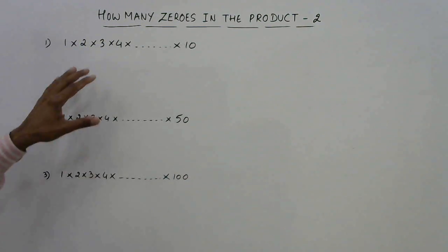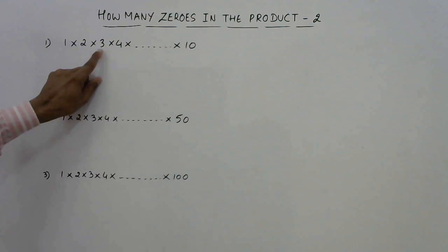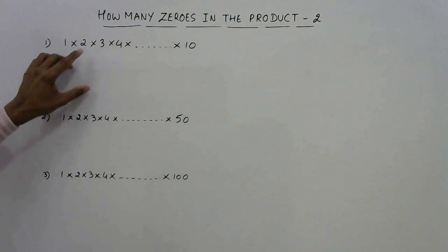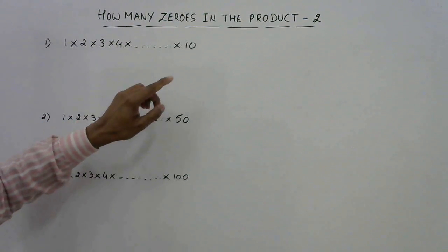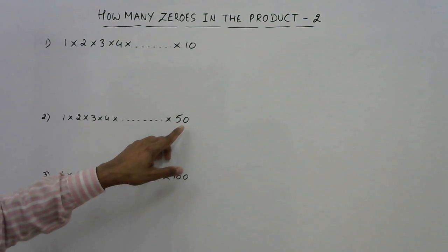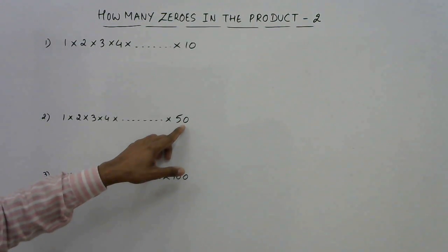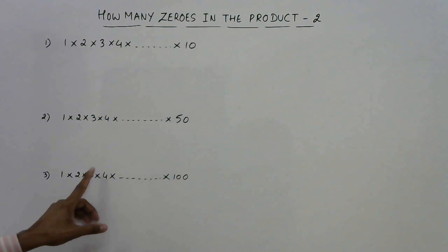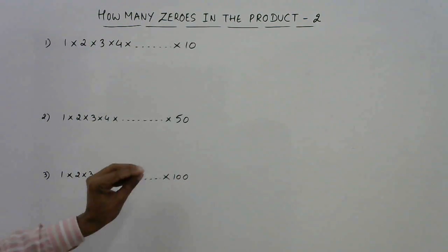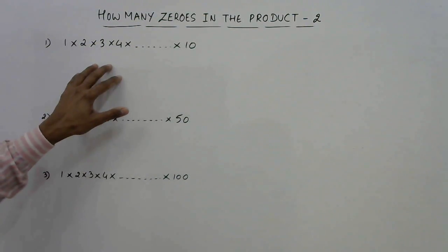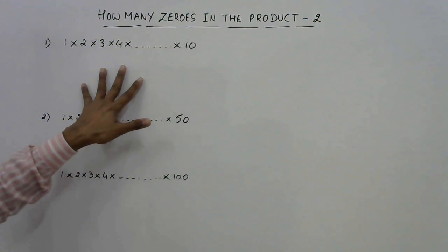The method of factorizing each and every term of the given product will also be very tedious, because in the first case it is only 10 numbers, but in the second case the product goes up to 50, and in the third case up to 100. So it is impossible to make factors of all the numbers and sort out the number of twos and number of fives. So to find the number of twos and number of fives, I have a method for you.